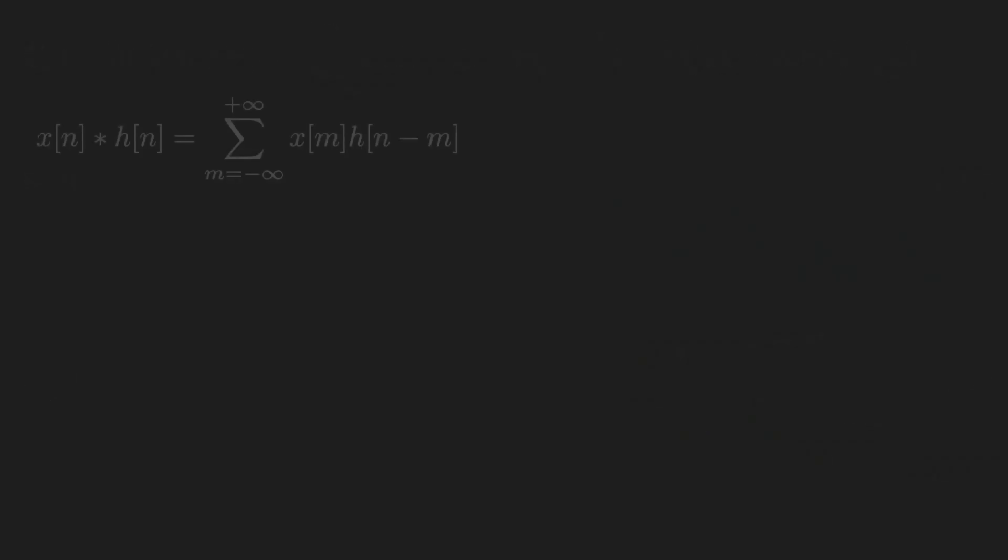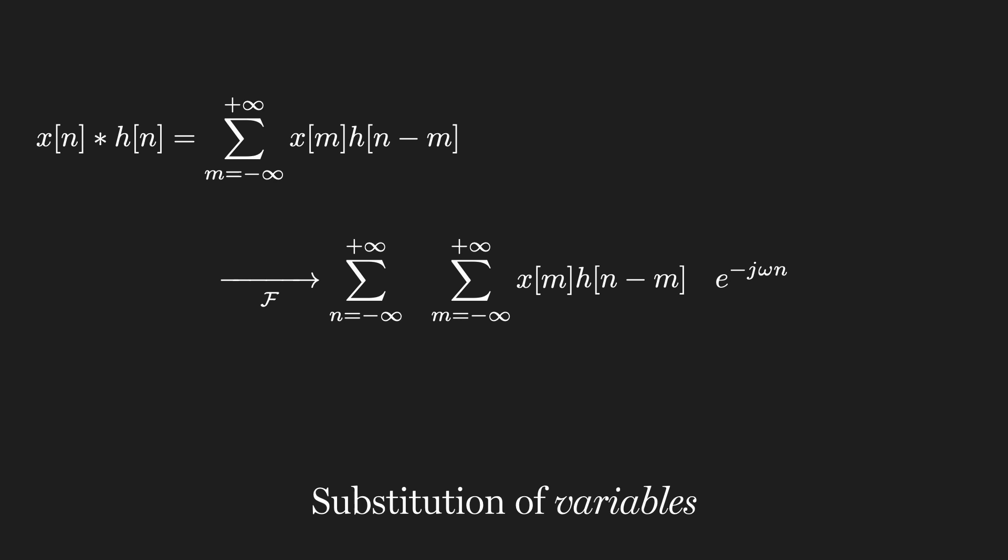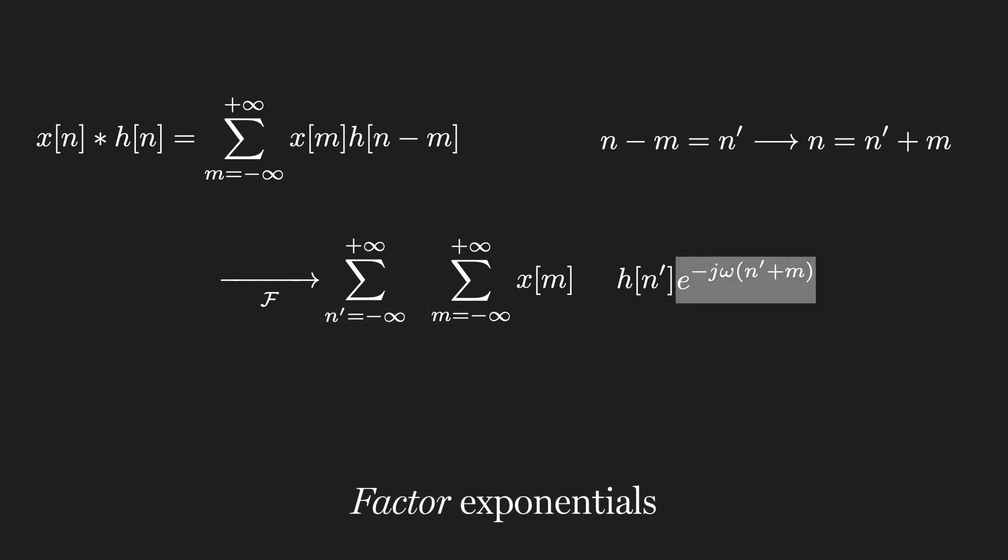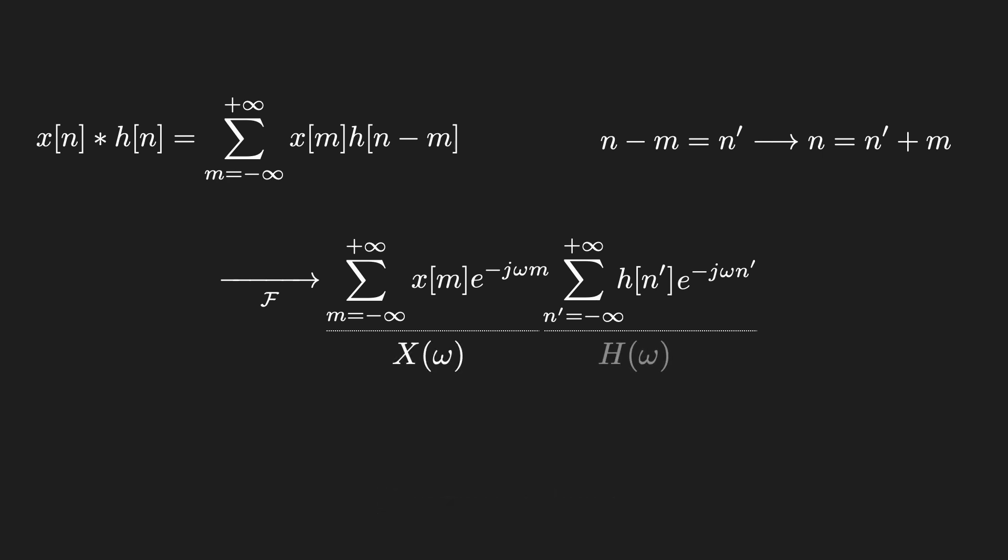It's a fairly straightforward proof, especially if we look across all time to account for both infinite and finite duration signals and systems. For a sampled signal of infinite duration, we apply the discrete time Fourier transform, multiplying the signal by a complex sinusoid of frequency omega, and summing over all time. Next, we can apply a substitution of variables, replacing n minus m with a new label, n prime. This means we can also replace n with n prime plus m. The summation variable will also change, but since it's from minus infinity to infinity, the limits remain the same. If we factor the complex exponential into two terms and rearrange the terms so that the sums only include terms with the variable of summation, we see that each sum is itself a DTFT, resulting in capital X of omega times capital H of omega.